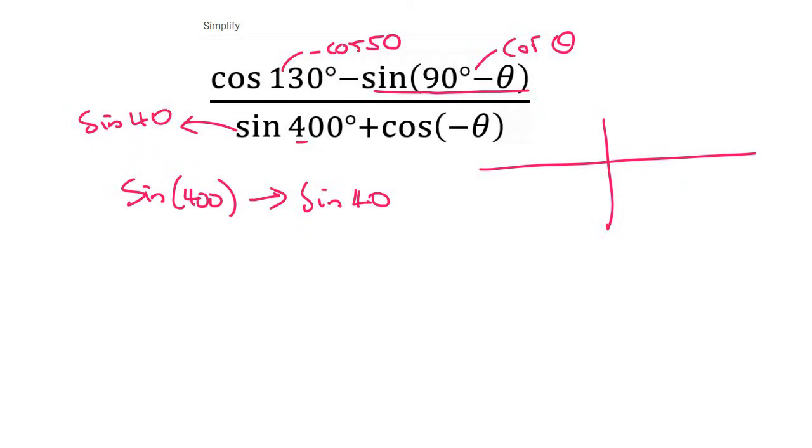Many students are tempted to just make this negative cos theta, because they think that the negative just comes out. That's not the way it works. What you do instead is realize that this is not something we usually have on the CAST diagram. So we add 360. You're allowed to do that. Remember, you're allowed to add or minus 360.